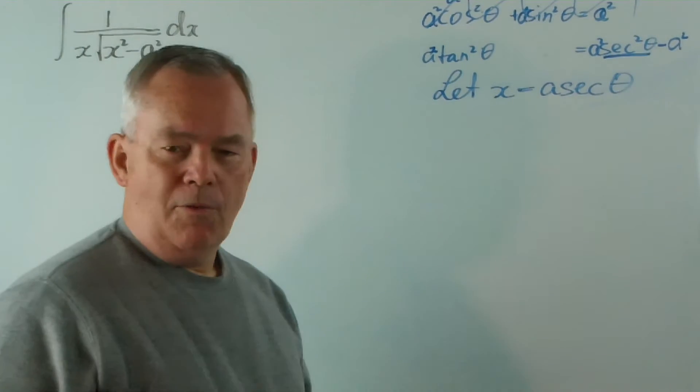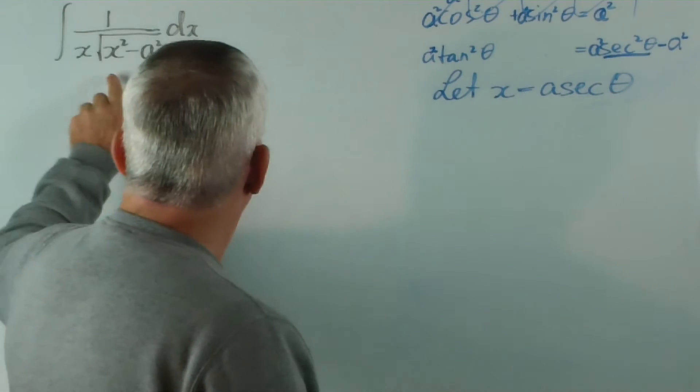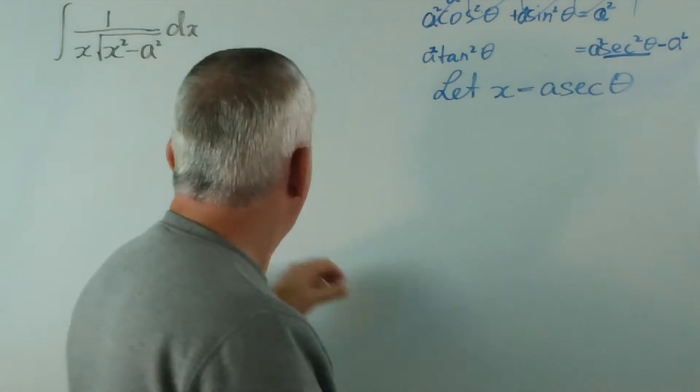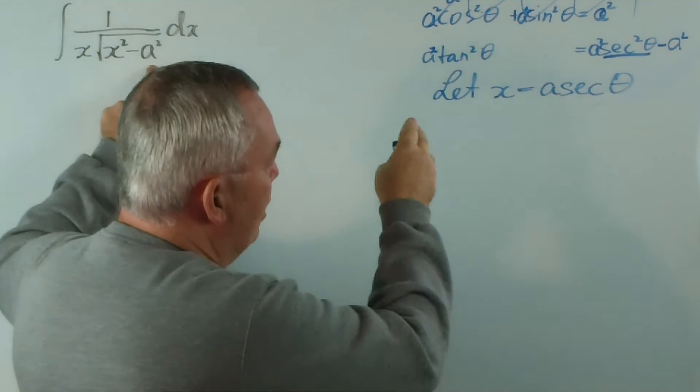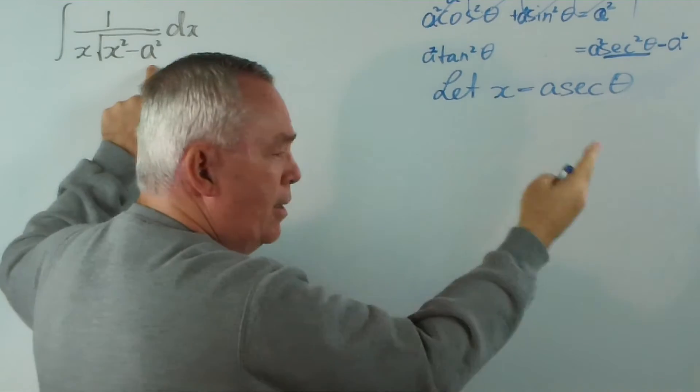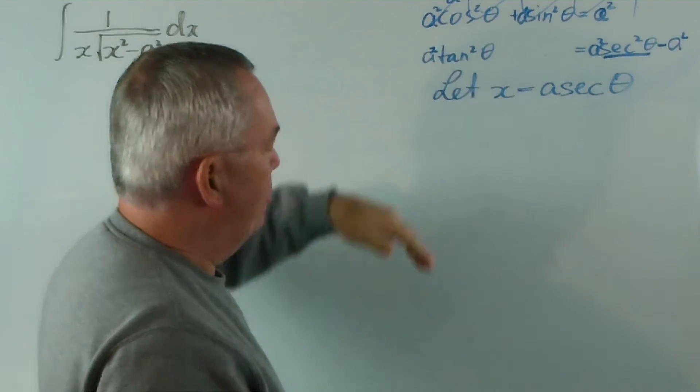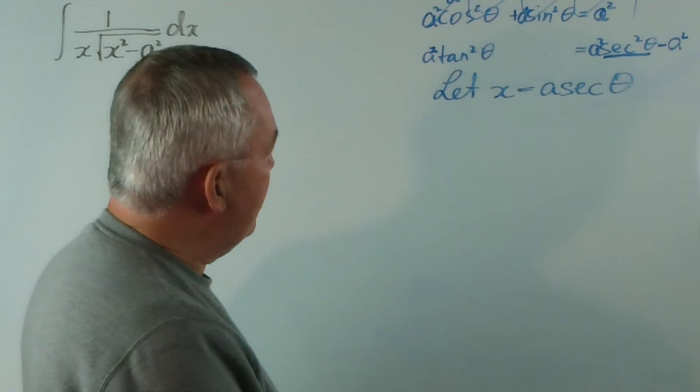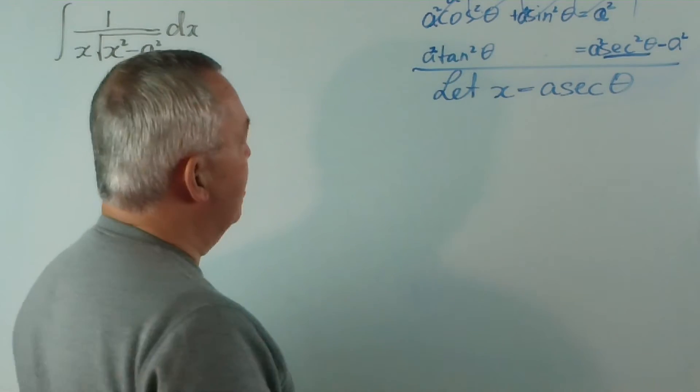But here we go. We're going to say let x equal a sec theta. Now I know it took a while for me to explain how to get here, but with practice, you see this structure and you think, I need a trigonometric substitution, and you see the difference between squares, and you think, where, how am I going to arrange these to get the negative one in the appropriate place from these three Pythagorean identities, and you'll work it out very quickly.